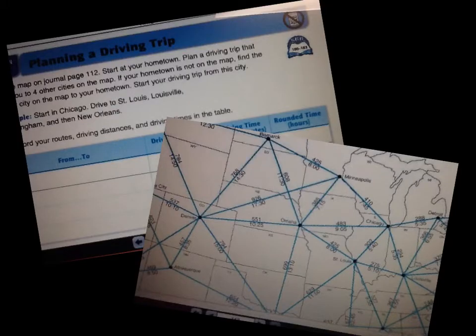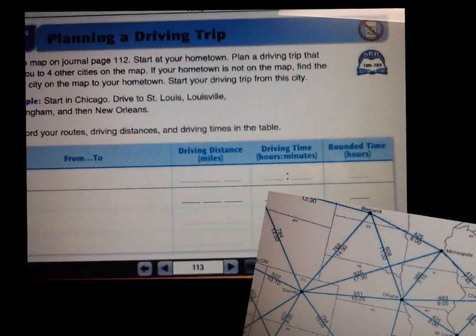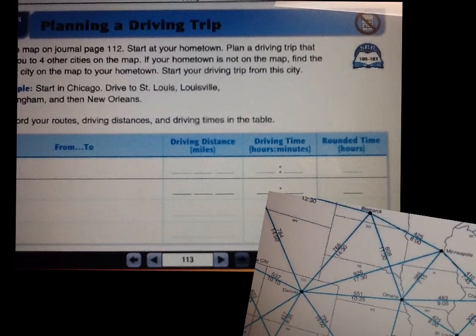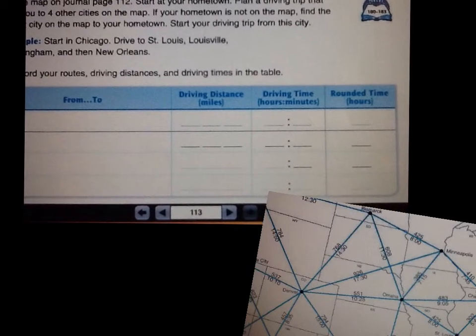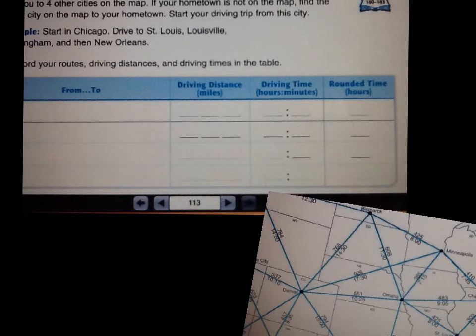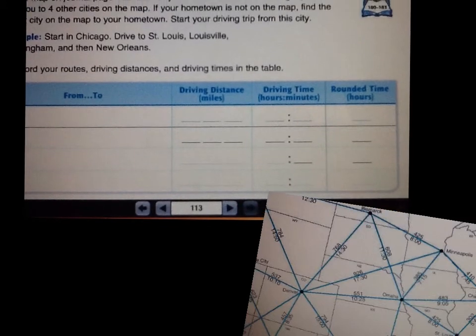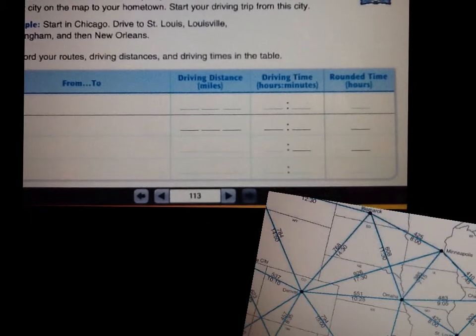Today, you're going to be estimating some distances. You're going to be planning a driving trip. Using the map on page 112, you're going to start at your hometown and plan a driving trip that is going to take you to four other cities. If your hometown is not on the map, find the city that's the closest.